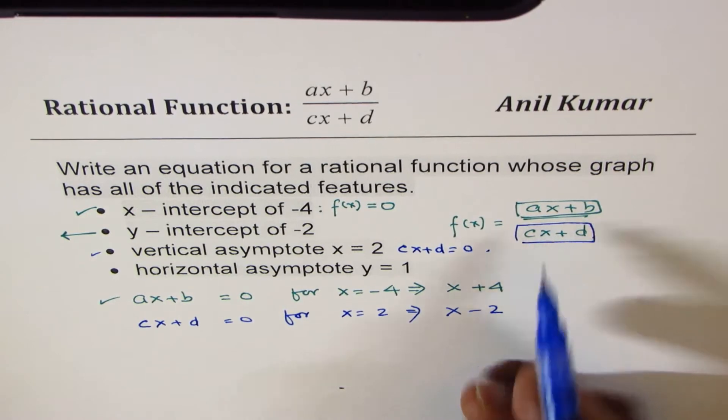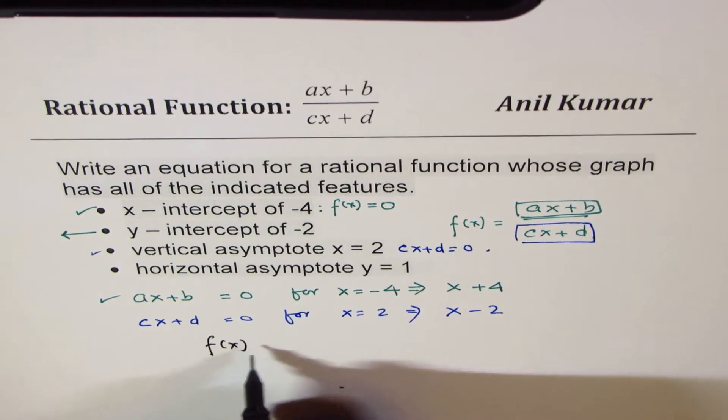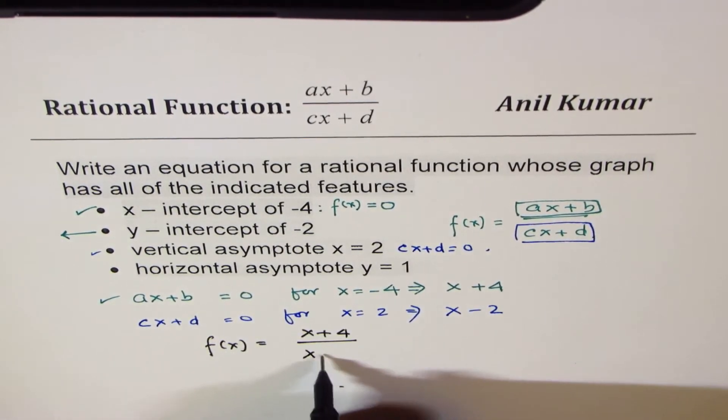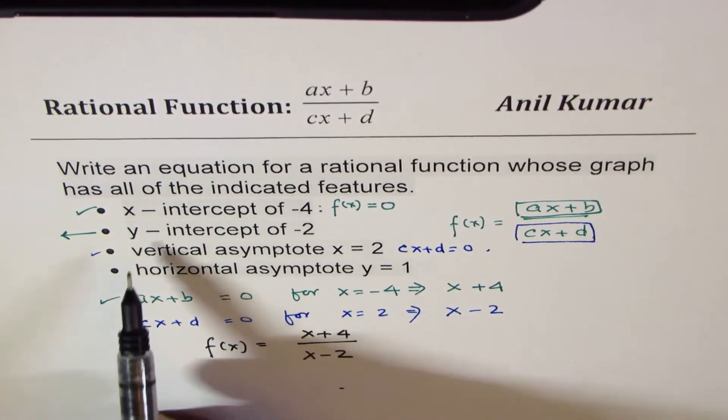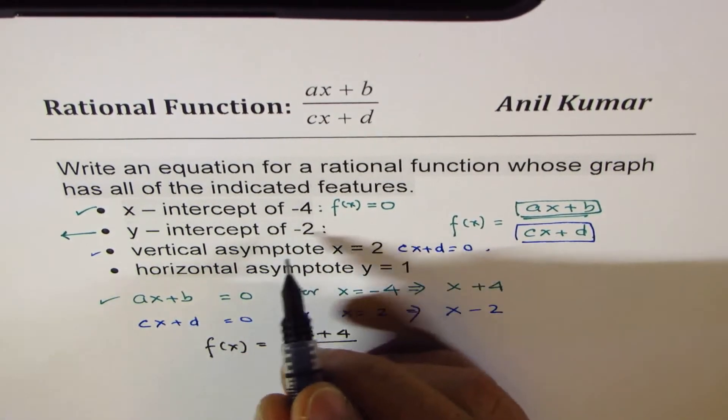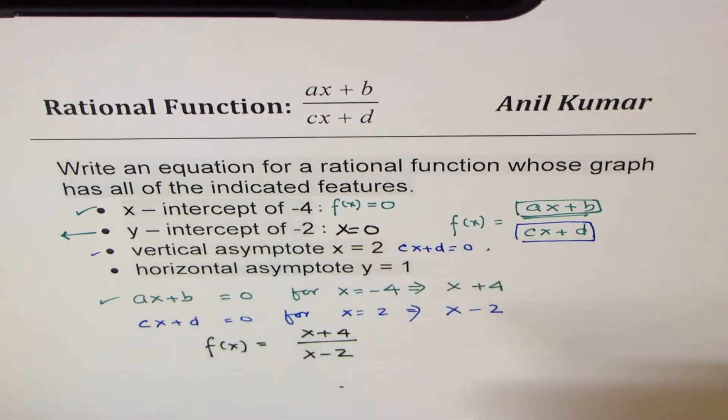We have almost our equation. So if you apply these two conditions, you can write the function as f of x equals to x plus 4 over x minus 2. Now let us check y intercept of minus 2.